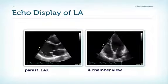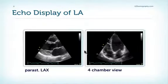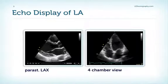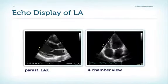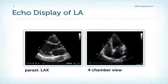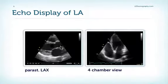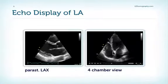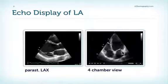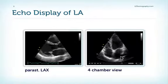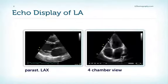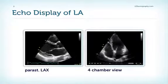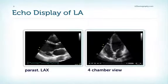How can we visualize the left atrium with echo? In a parasternal long axis view, the left atrium lies behind the aorta. In a four-chamber view, we can see the pulmonic veins entering the left atrium — the left pulmonic vein and the right upper pulmonic vein.